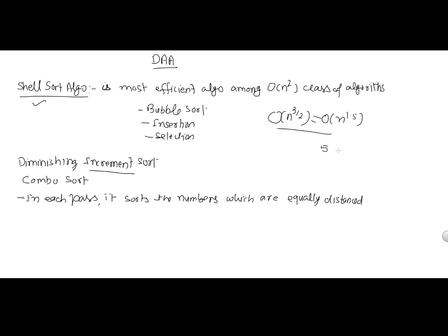To understand what 'equally distanced apart' means, take the example array: 5, 4, 3, 2, 1. In bubble sort, we compare consecutive numbers — 5 with 4, then 4 with 3, then 3 with 2, then 2 with 1. But in Shell Sort, we compare elements which are d distance apart. Suppose d equals 3, then we compare 5 with 2, then 4 with 1, and so on.